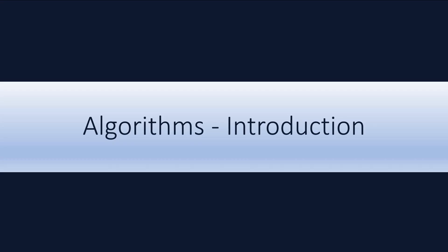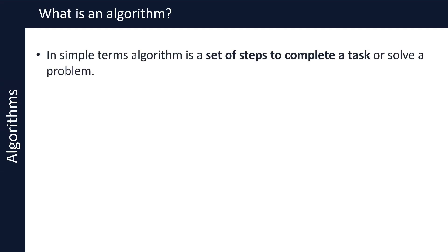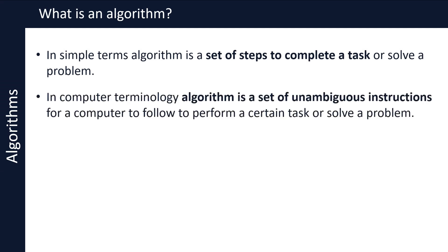In this video we will take a look at algorithms. What is an algorithm? In simple terms, an algorithm is a set of steps to complete a task or solve a problem. In computer terminology, an algorithm is a set of unambiguous instructions for a computer to follow to perform a certain task or solve a problem.